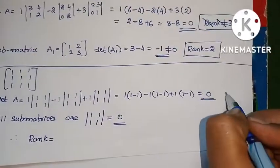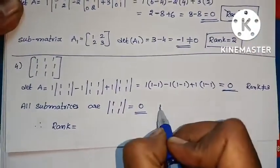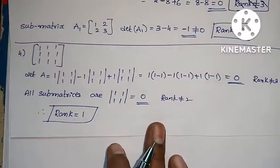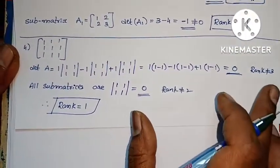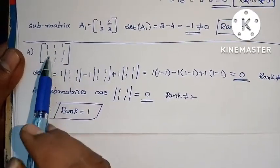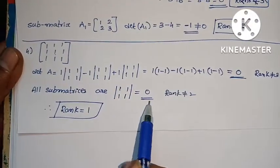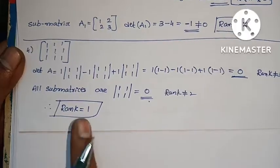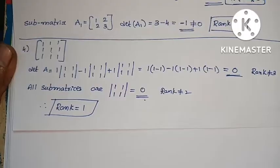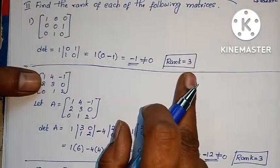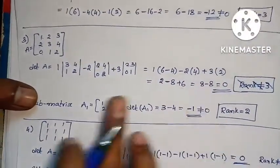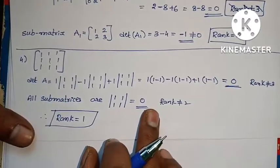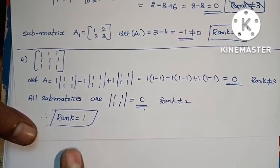Since all sub-matrix determinants are 0, rank is not equal to 2 either. Therefore rank equals 1. To summarize: if det ≠ 0, rank = 3. If det = 0, check sub-matrices — if a sub-matrix det ≠ 0, rank = 2. If all sub-matrix determinants are also 0, rank = 1.